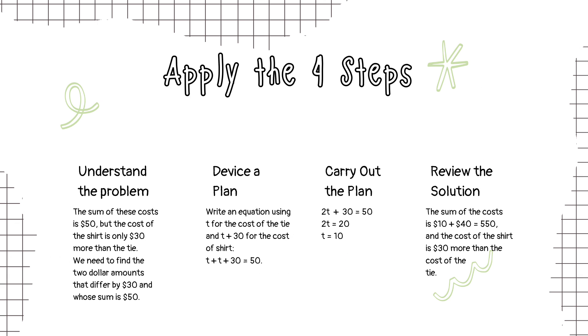For our plan, we need to write an equation using T for the cost of the tie and T plus 30 for the cost of the shirt. Our solution will be like this.